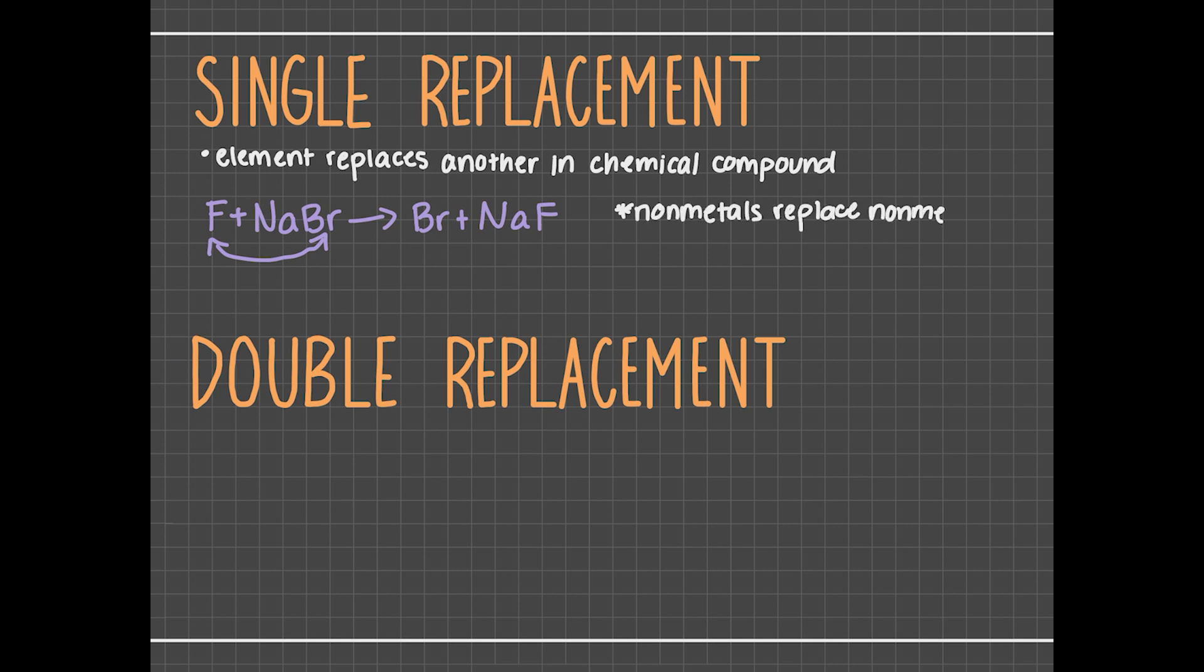So we can represent single replacement reactions with the formula A plus BC produces B plus AC, where elements A and B are both metal or both nonmetal.